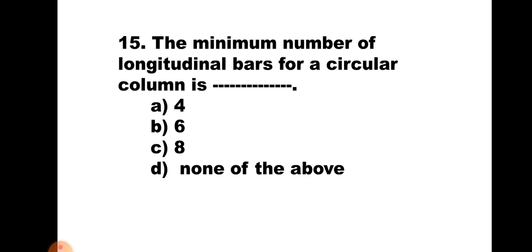Question number 15. The minimum number of longitudinal bars for a circular column is: A) 4, B) 6, C) 8, or D) none of the above. For a circular column, minimum 6 bars are required. Hence the correct answer is B, 6.